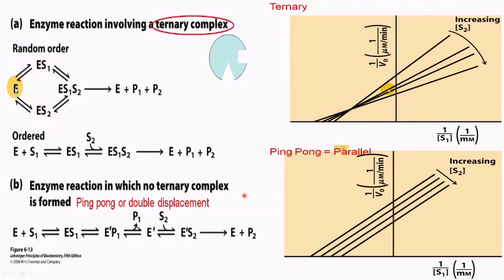In the double reciprocal plot, for a ternary complex we see an intersection of lines, whereas for a ping-pong or double displacement mechanism, parallel lines are seen with no intersection. This is the key difference between the ternary complex and the ping-pong complex in the Lineweaver-Burk plot.